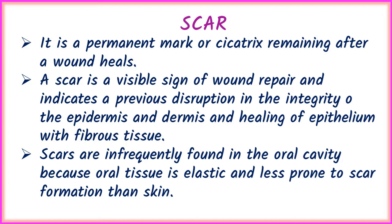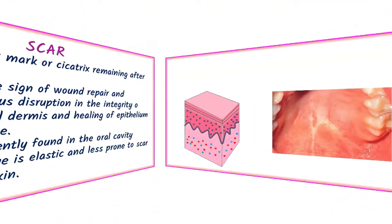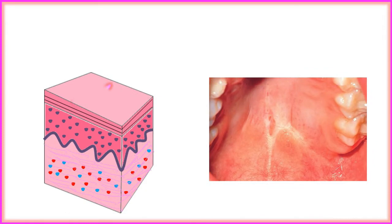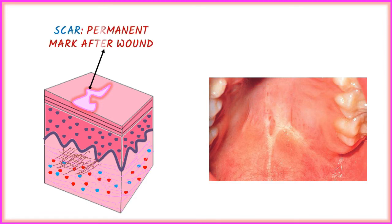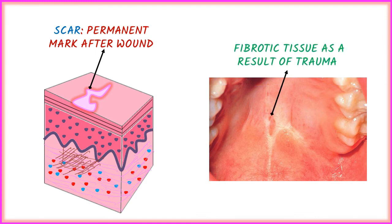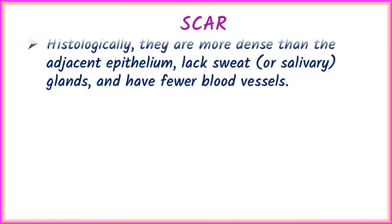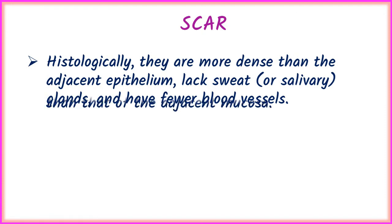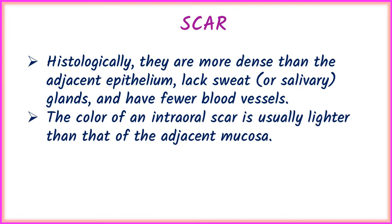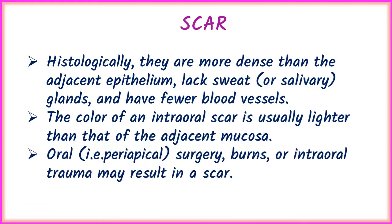Scars are infrequently found in the oral cavity because oral tissue is elastic and less prone to scar formation than skin. Histologically, scar tissue is more dense than adjacent epithelium, lacks sweat glands, and has fewer blood vessels. The color of an intraoral scar is usually lighter than that of the adjacent mucosa. Oral surgery, burns, or intraoral trauma may result in a scar.